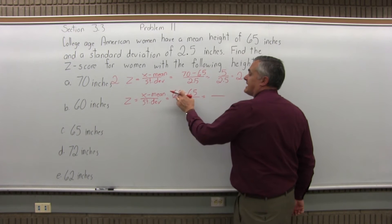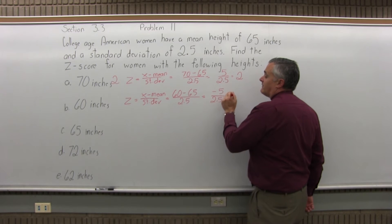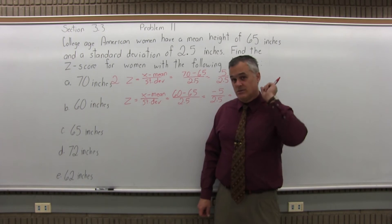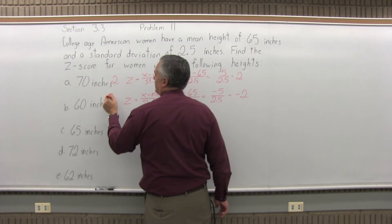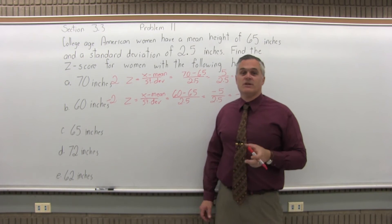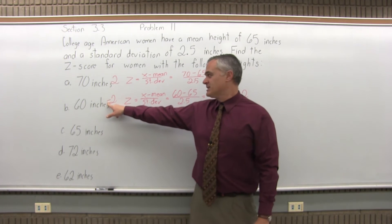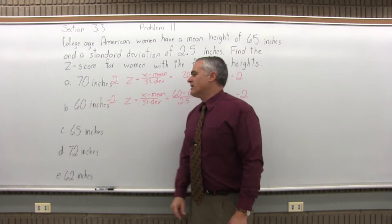Now, pay attention to the signs. 60 minus 65 is negative 5 over 2.5. That's negative 2. So a woman who's 60 inches tall has a z-score of negative 2. That means two standard deviations below average in height. Your initial reaction to a negative value might make you question if you made a mistake. Negative just means smaller than average. 60 is a little shorter than average.